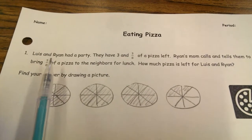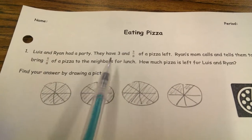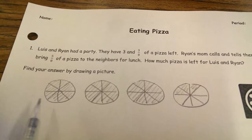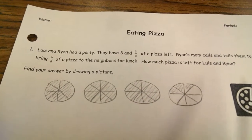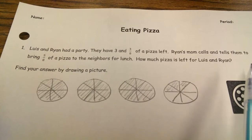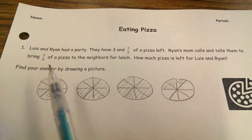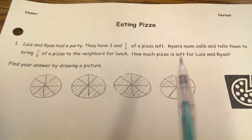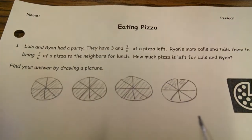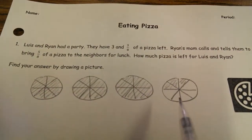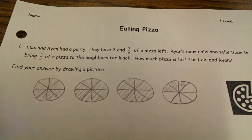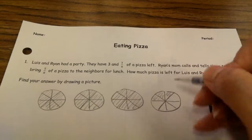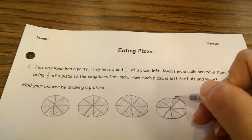In the first problem, Lewis and Ryan had a party. They have 3 and 3 eighths of a pizza left — that's what I drew down here, I shaded 3 and 3 eighths. Ryan's mom calls and tells them to bring 5 eighths of a pizza to the neighbors for lunch. How much pizza is left for Lewis and Ryan? They had 3 and 3 eighths, but since Ryan's mom tells them to give 5 eighths to the neighbors,